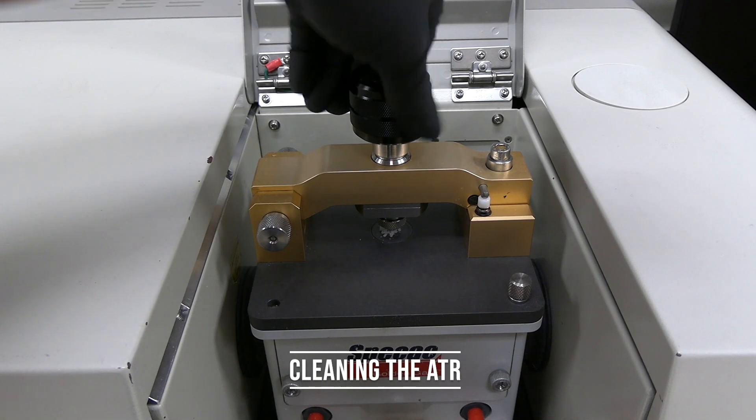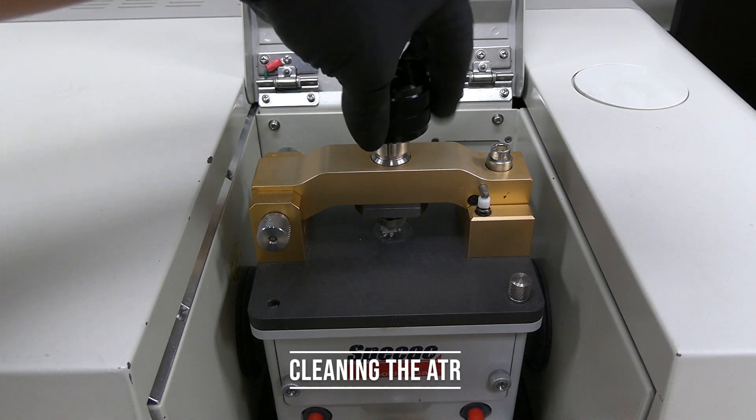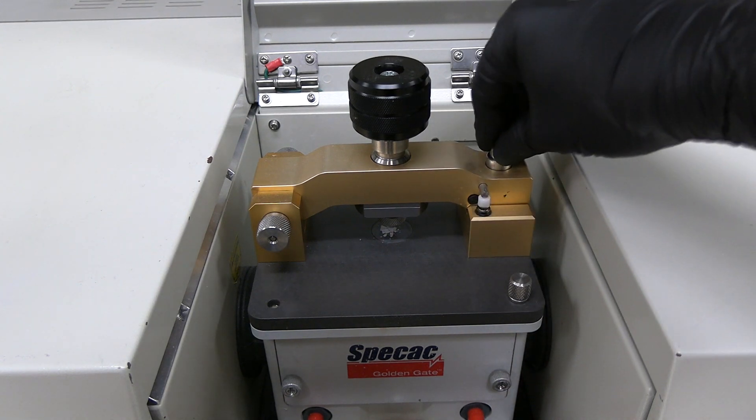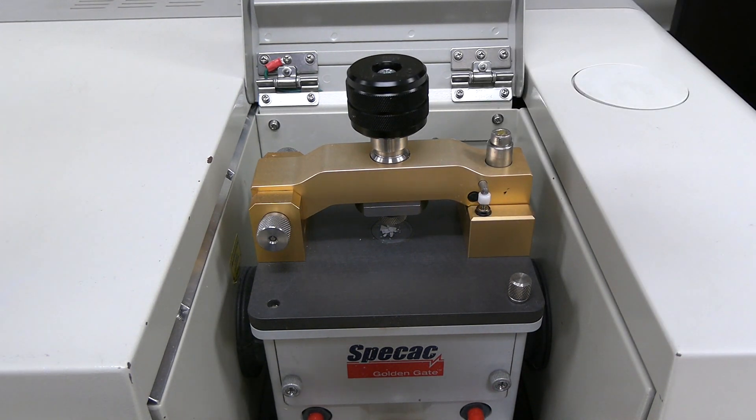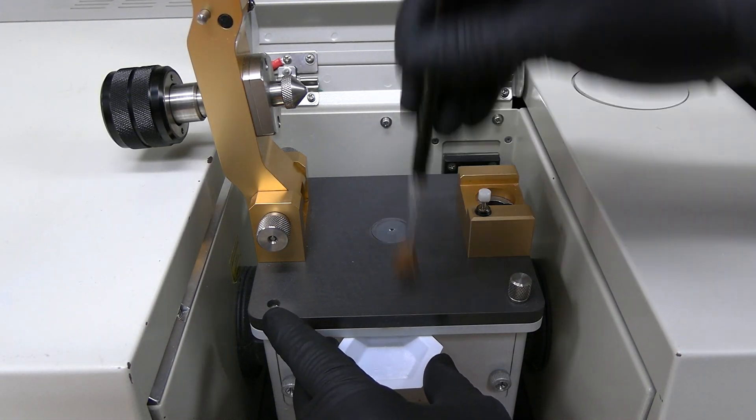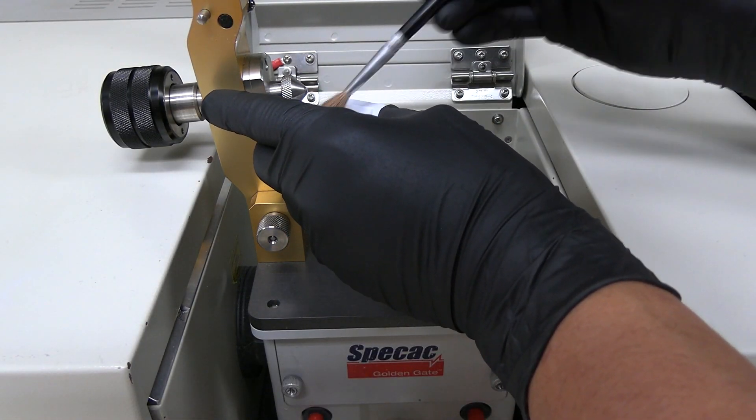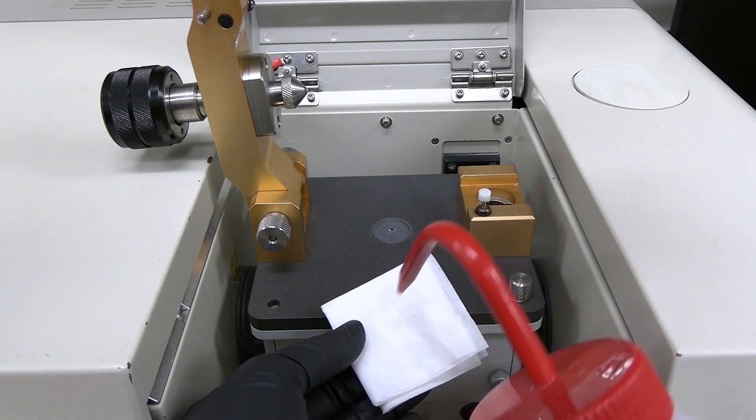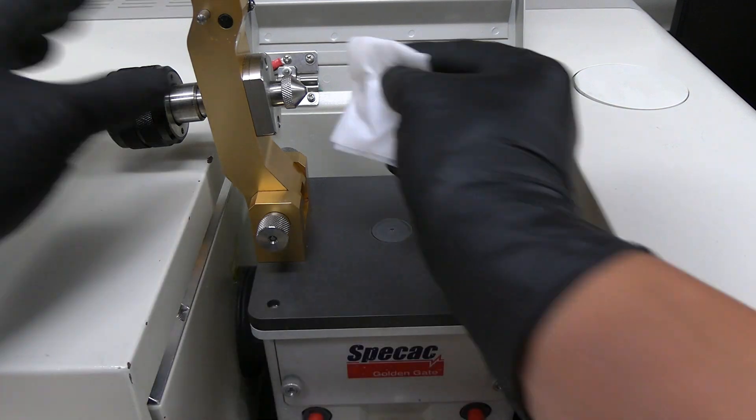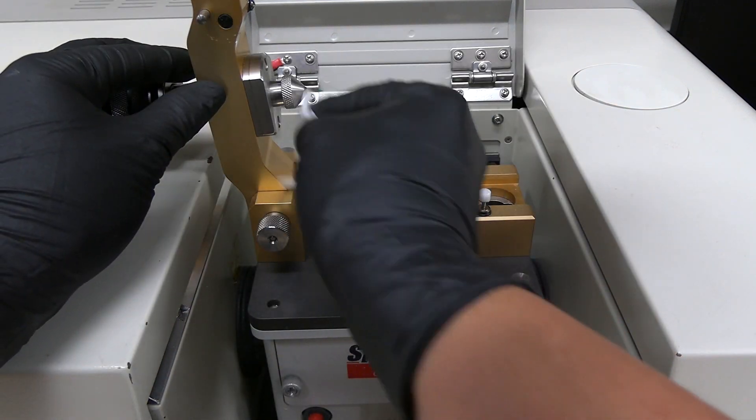Cleaning the ATR. Turn the anvil knob counterclockwise. Press the locking lug and turn it counterclockwise to release the anvil arm. Lift the anvil arm. Use a soft brush to wipe off the sample from the sample window and anvil. Moisten a kim wipe with acetone. Wipe off the sample window and anvil. Do not soak the sample window. Allow to air dry.